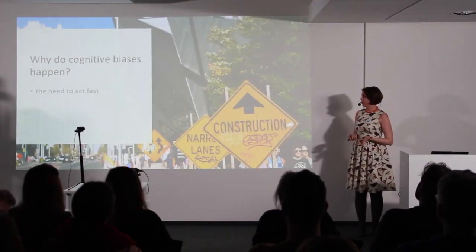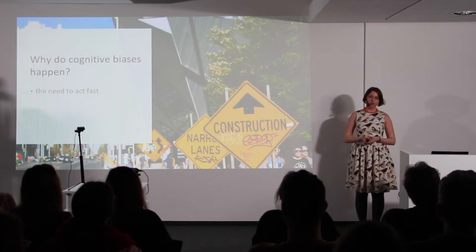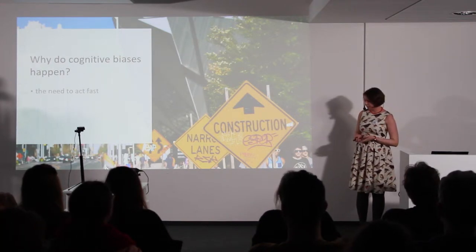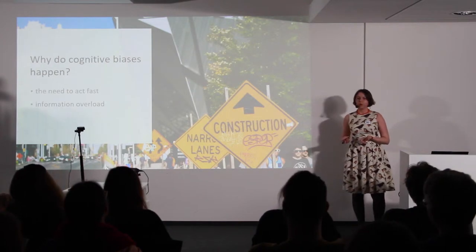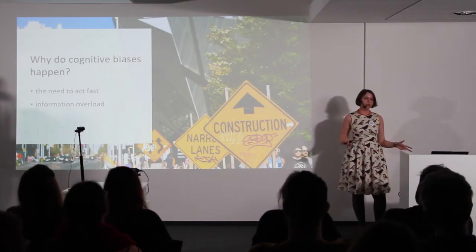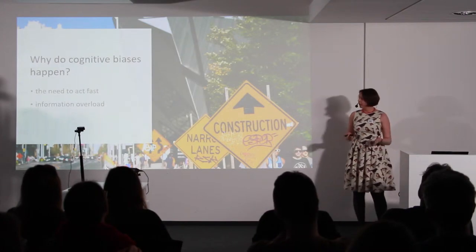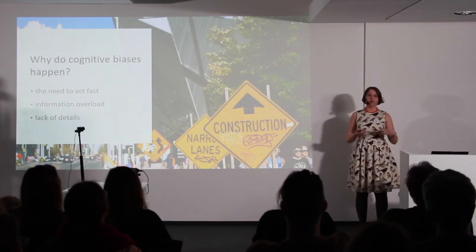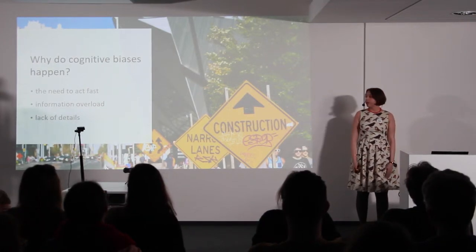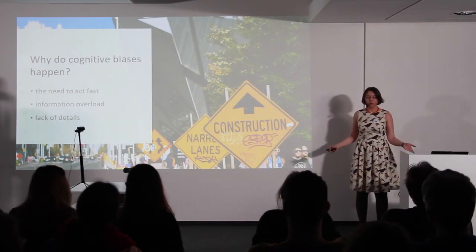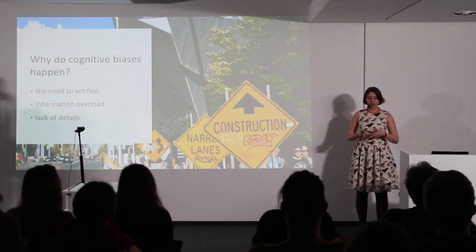Why do cognitive biases happen at all? It's because our brain is not a super precise computer and it's not very fast at calculations, while our life often requires us to act very fast. We need to make decisions quickly and don't have enough time to make rational decisions. At the same time, there is information overload — we are always bombarded with a lot of different information, and we have to select which information is important and which is less important. What's worse, we often still lack details — we have a lot of information, but for many cases we don't have a full picture of the situation. So our brains try to find a workaround — a proxy by which they can make a decision fast with lacking information, and also filter when there is too much information.